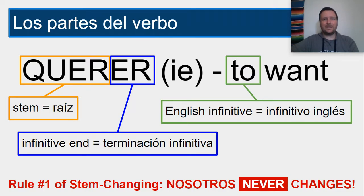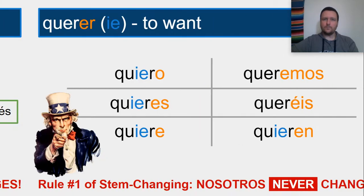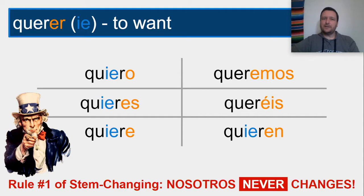We have infinitives in English — they all start with 'to.' If you remember back to last chapter when we did the verb querer, 'to want,' we have our forms quiero, quieres, quiere, queremos, queréis, quieren. The stem vowel, which is the last vowel in the stem, is the one that changes — in this case an E to an IE.